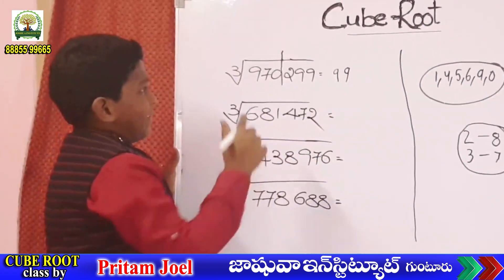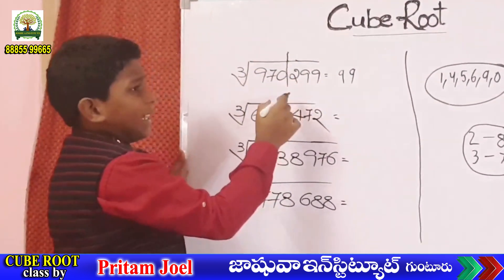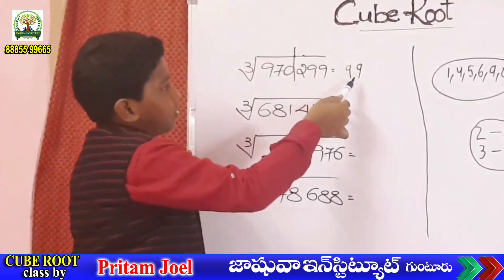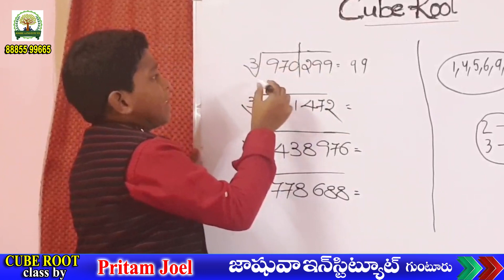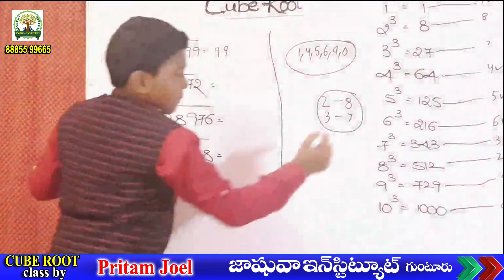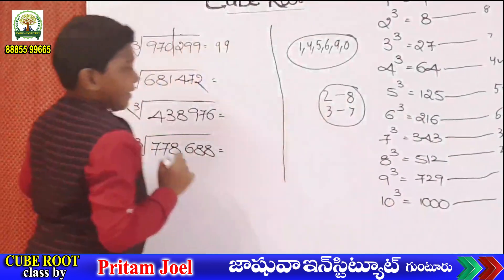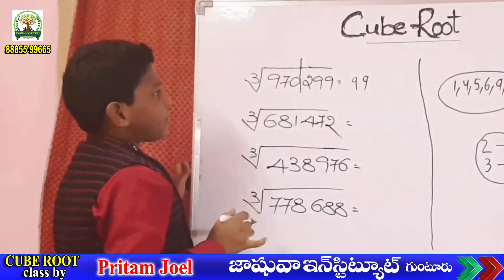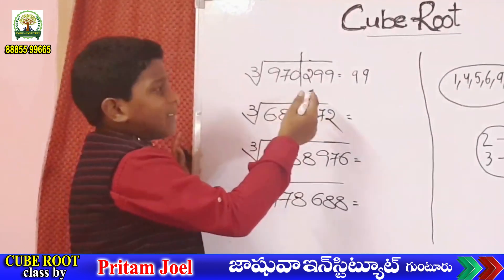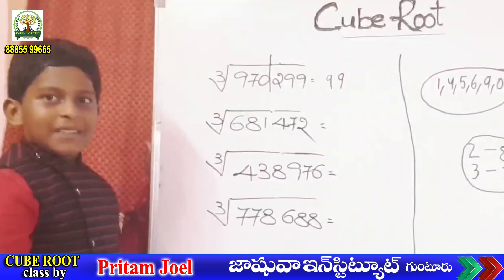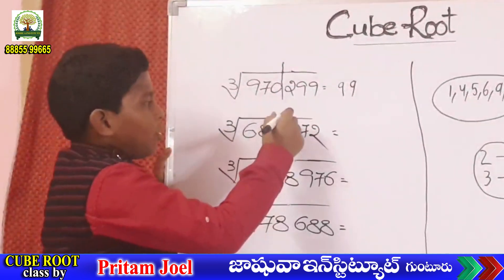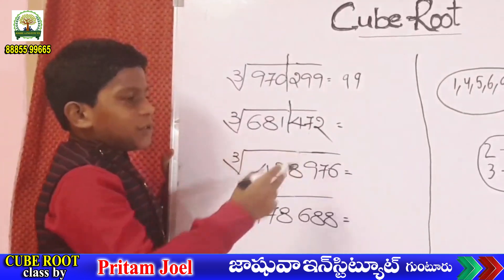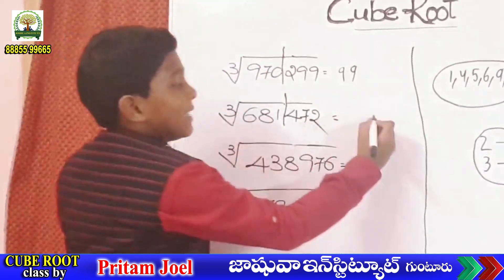Next, remove last 3 digits. If the unit place is 2, the answer unit place is 8. Remaining 970 is bigger than 729, means 9 cube. Cube root cancels, so 9. This answer is 99.